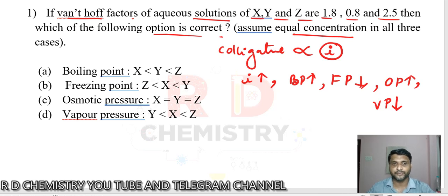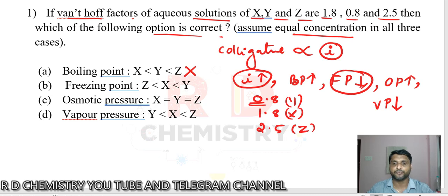Based on this we will find out boiling point. I will write in the order: 0.8, then 1.8, then 2.5. 1.8 for X, 0.8 for Y, and 2.5 for Z value. So boiling point of X cannot be smaller. First one is not the correct one.